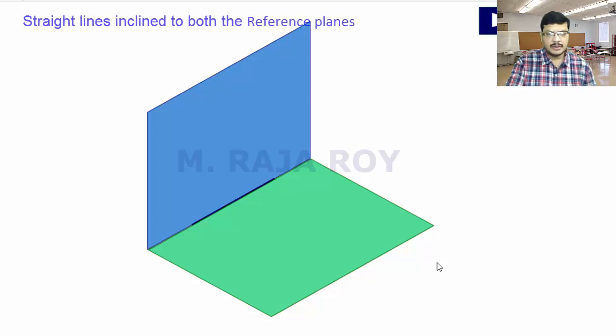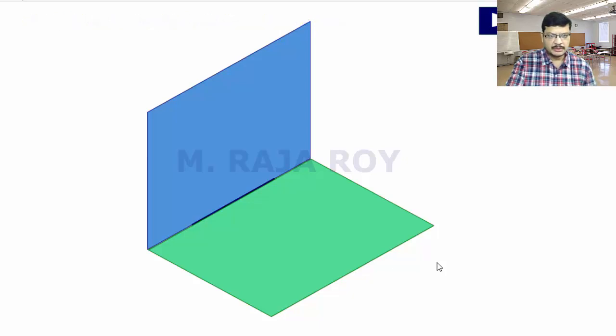In this tutorial, I am going to explain the concept of straight lines inclined to both the reference planes. To understand this concept, we have to consider two observations.